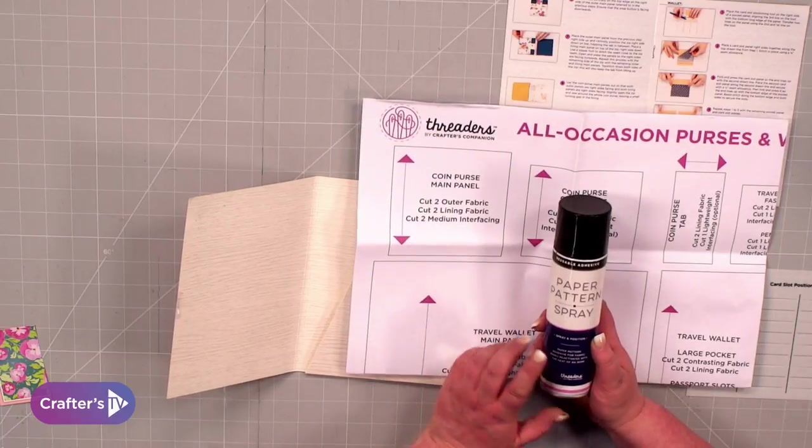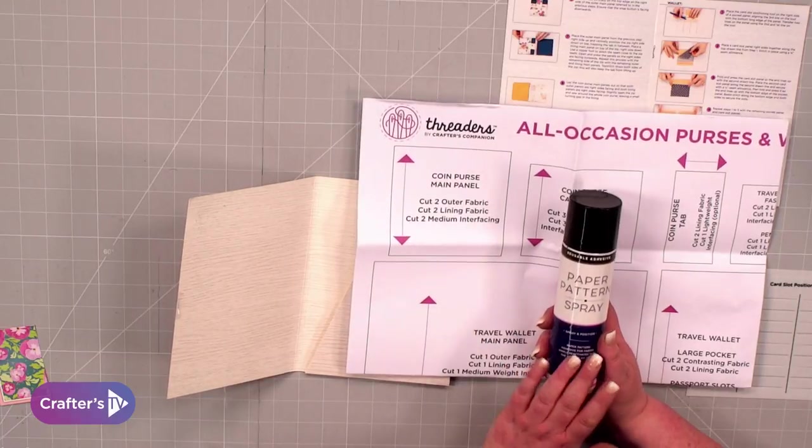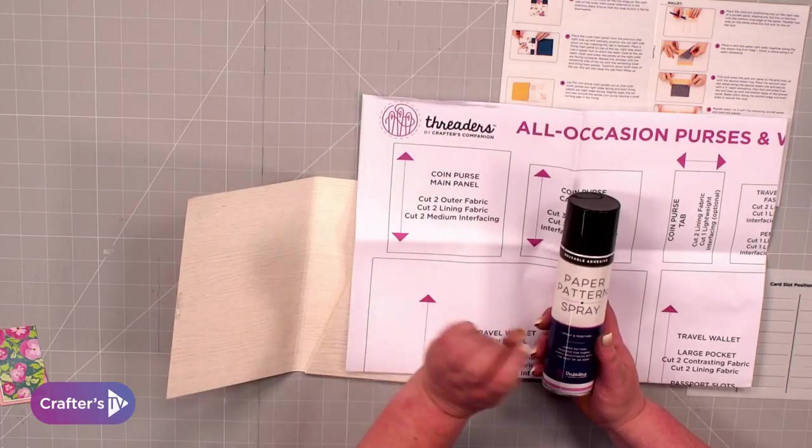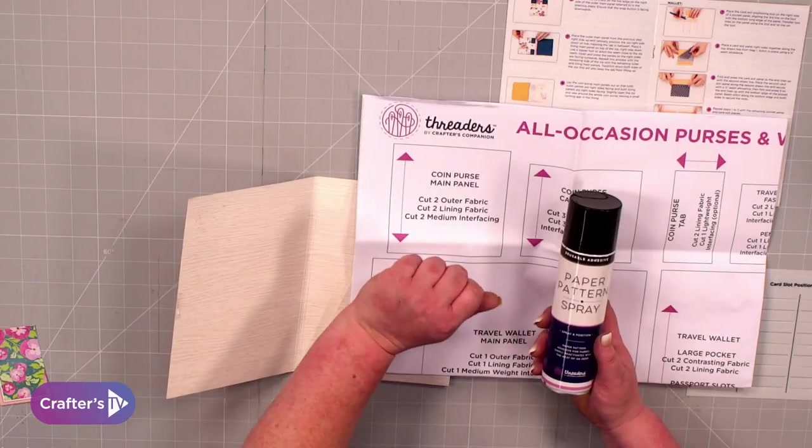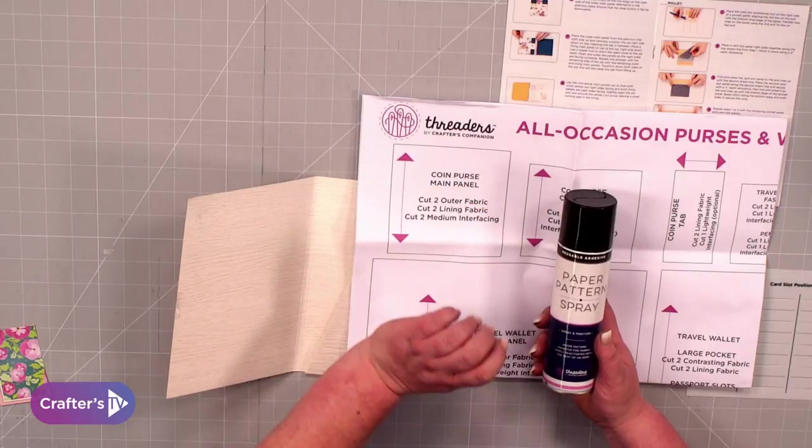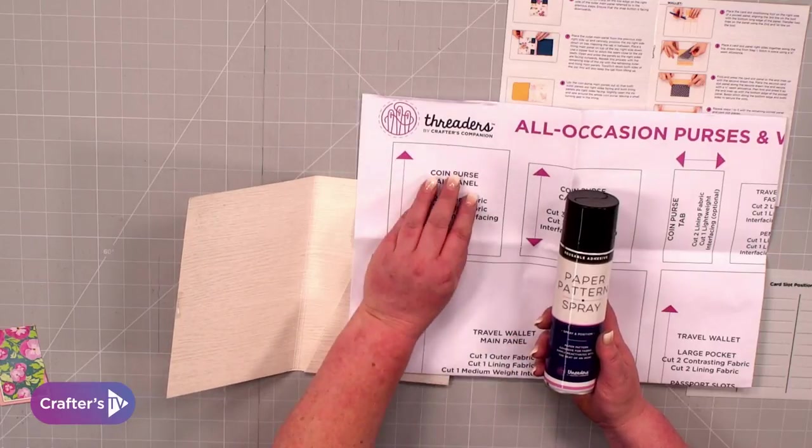You can pin these onto your fabric, or you can use our paper pattern spray. This is an adhesive that activates with heat. You spray the back of your pattern piece, put that onto your fabric, and put your iron on.